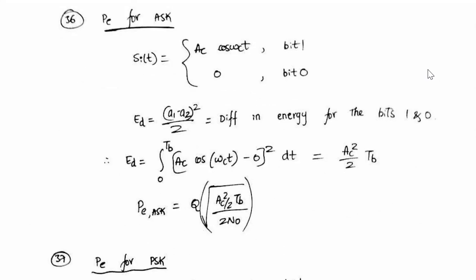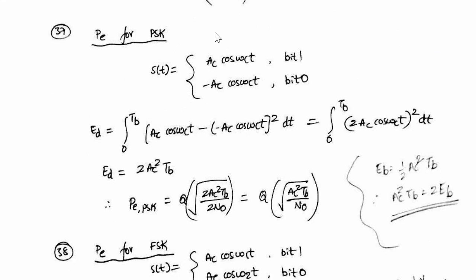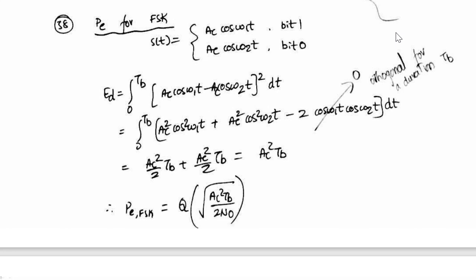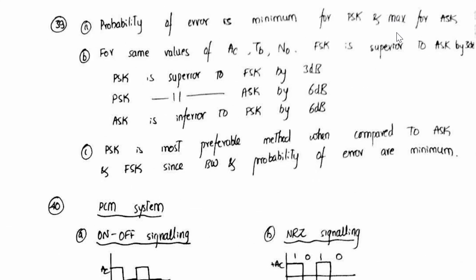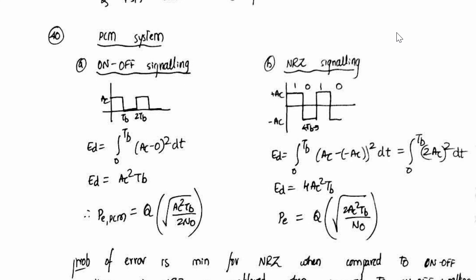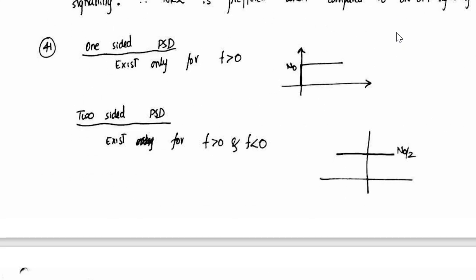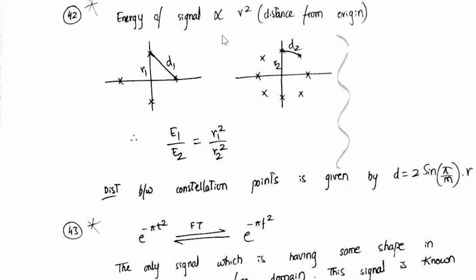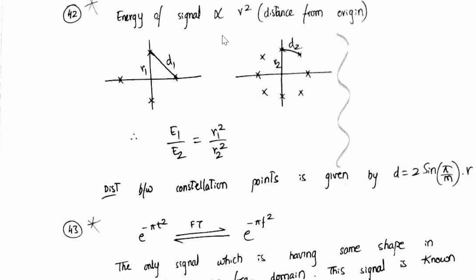So probability of error for ASK, then this is for PSK, then this is for FSK. So some comparisons, so these relations are important.